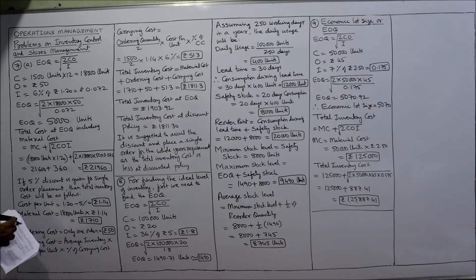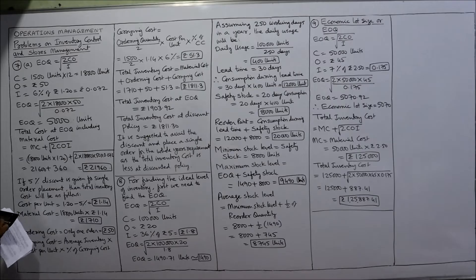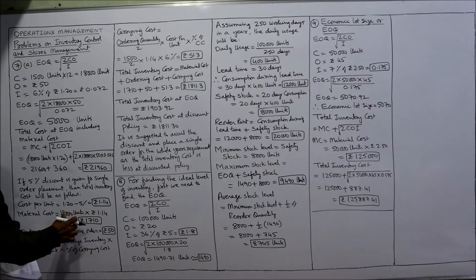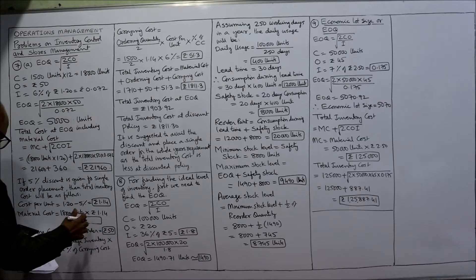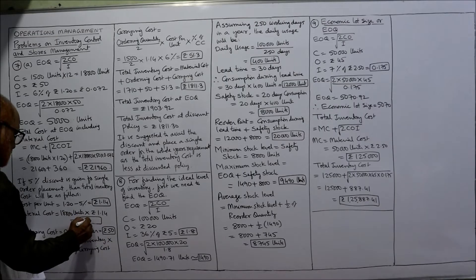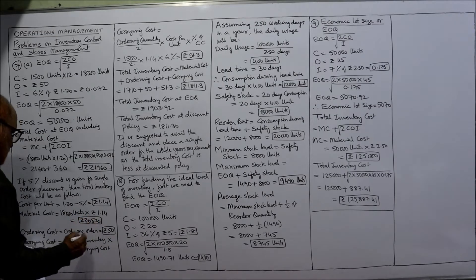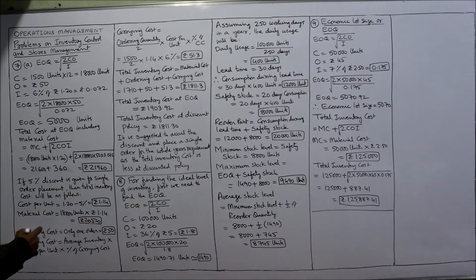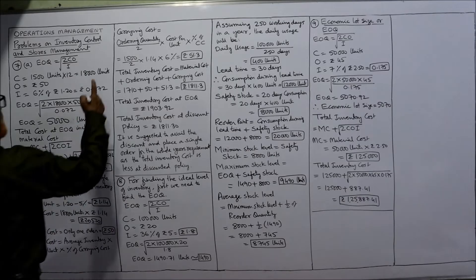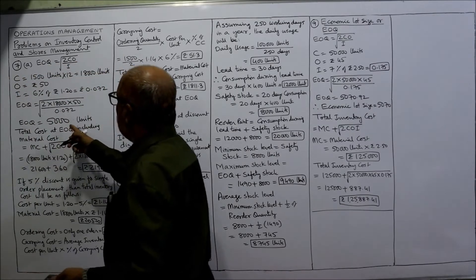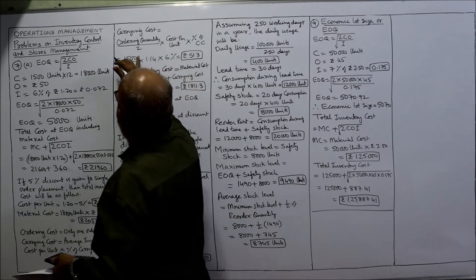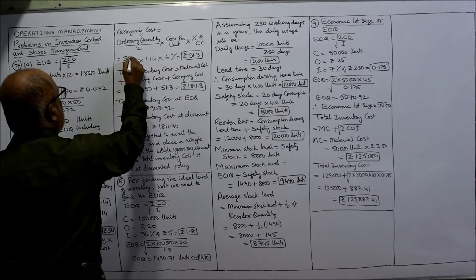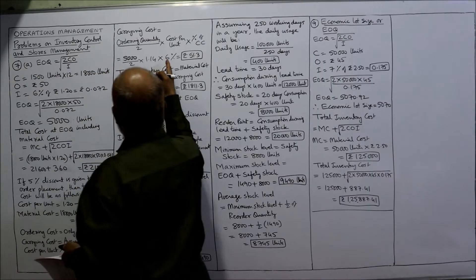So the material cost will be 18,000 units into 1.14, which comes to 20,520. The ordering cost for one order is 50 rupees. The carrying cost is: average inventory equals ordering quantity 5000 divided by 2, into cost per unit 1.14, into percentage carrying cost 6%.